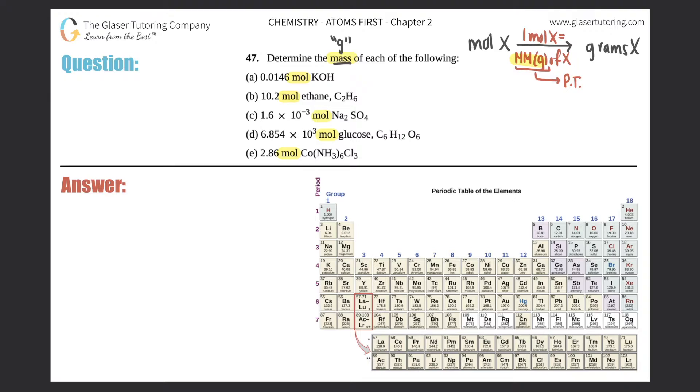I'm going to do the molar mass for part A, but then I'm going to assume that you guys know how to do them, so it will be quick. For these you always start with what you're given. For part A, I'm going to start with 0.0146 moles of KOH. Now we're converting, so we times by a ratio. We don't want moles anymore, that goes on the bottom, and we want grams.